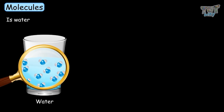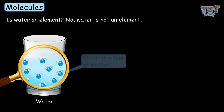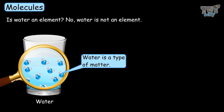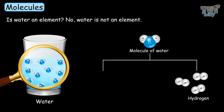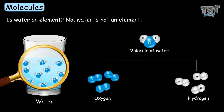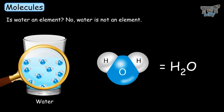So is water an element? No, water is not an element. Water is a type of matter that has two types of elements — hydrogen and oxygen — and they exist as molecules. Each molecule has a composition of H2O.